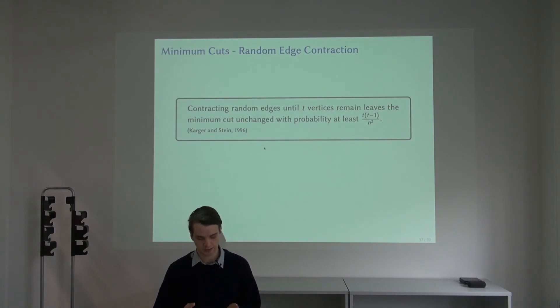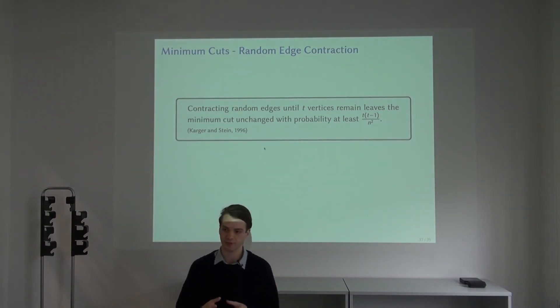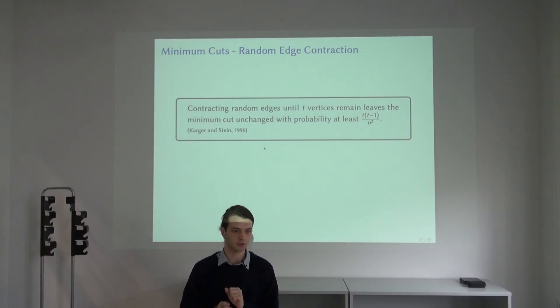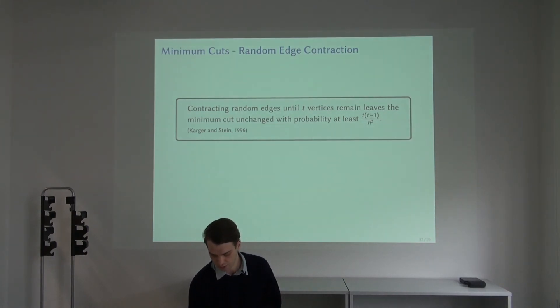There is a well-known lemma about how these two relate, how much you have to shrink the graph to get a certain probability of still maintaining the minimum cut. Previously, algorithms have taken one of two very extreme choices: either contracting until only a constant number of vertices are left, then you get a very small probability of success, which is just one over n squared. So you would need many repetitions of this process to get some success.